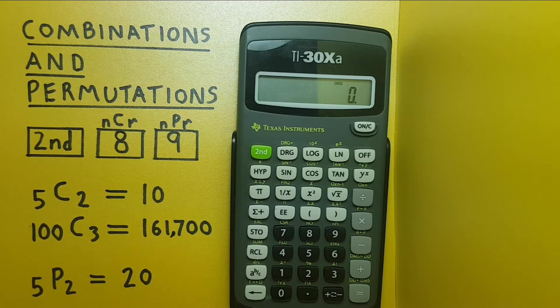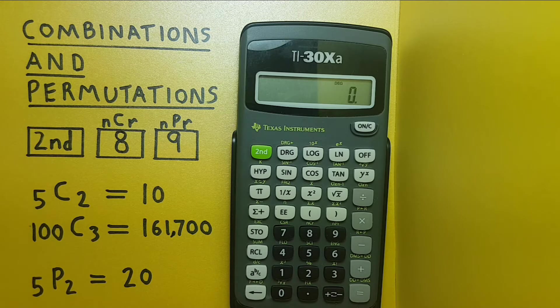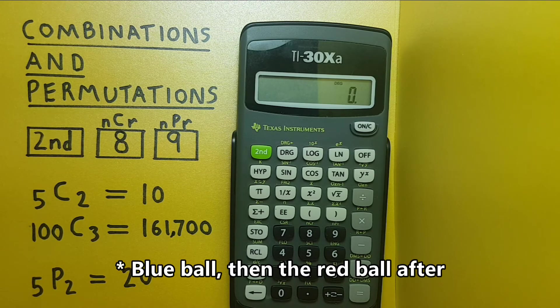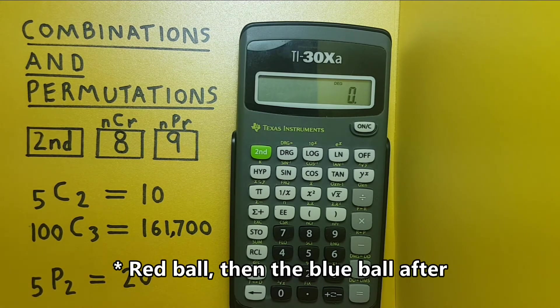All right let's start by looking at combinations. With combinations you choose a certain number from a set and the order does not matter. So this means if we have five balls and we choose two, if we choose the blue ball and the red ball, it is the same as choosing the red ball and the blue ball. It's the same result.